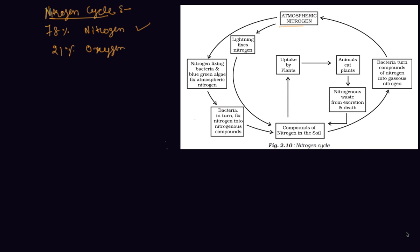Nitrogen is then used for the synthesis of plant proteins and other compounds.